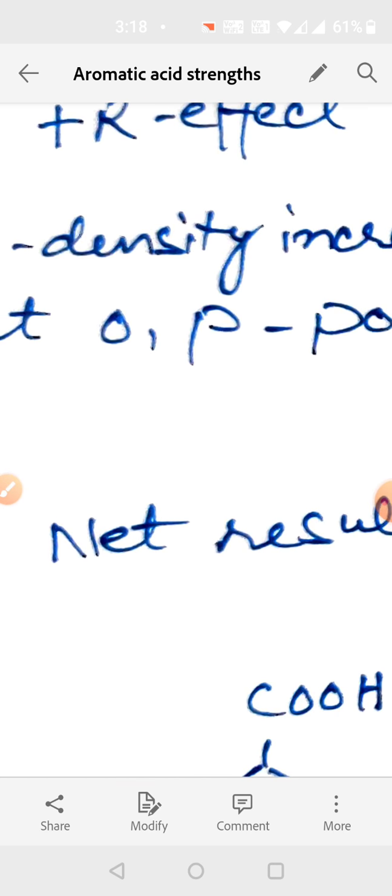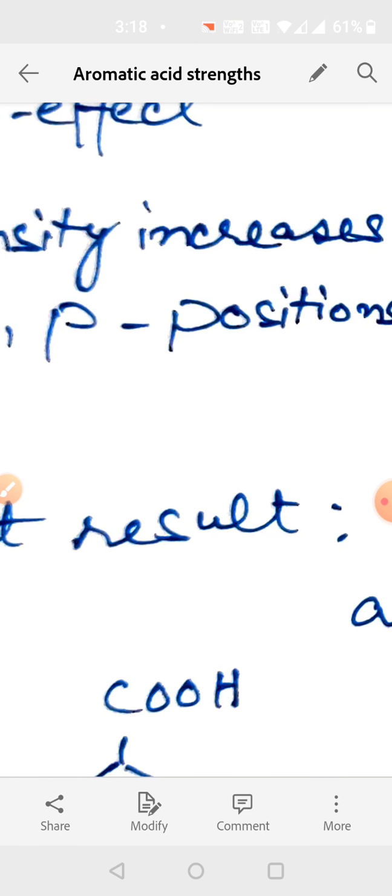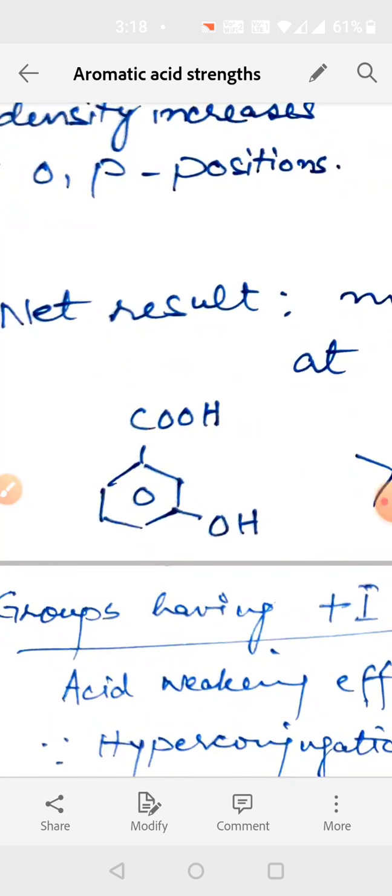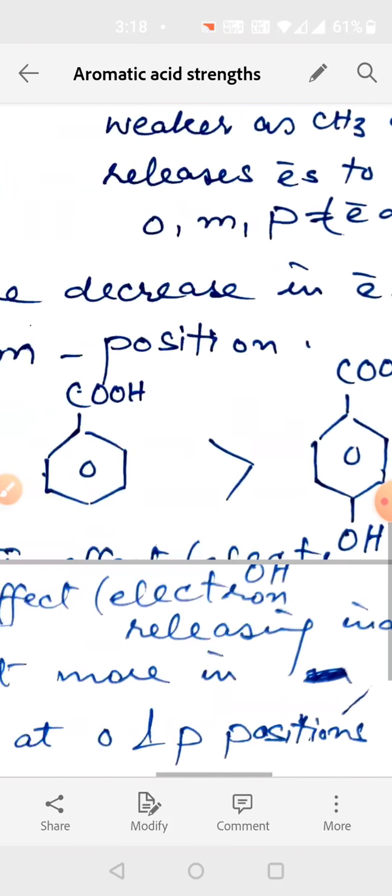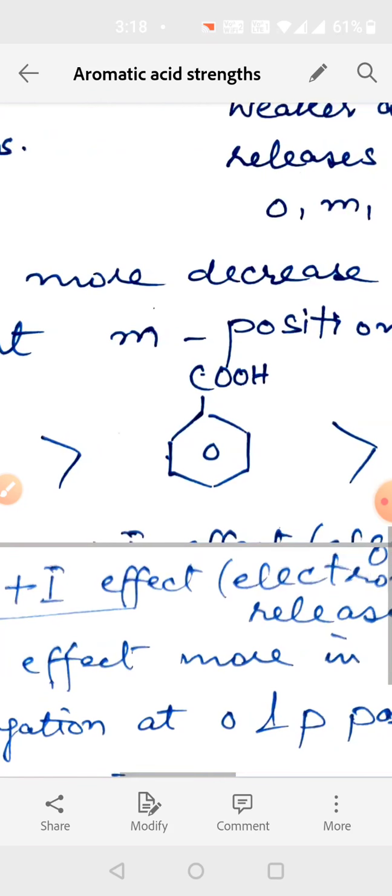But the effect is that density increases. So at meta position, there is more decrease. At ortho para, it is somewhat neutralized. So net result is more decrease in electron density at meta position.